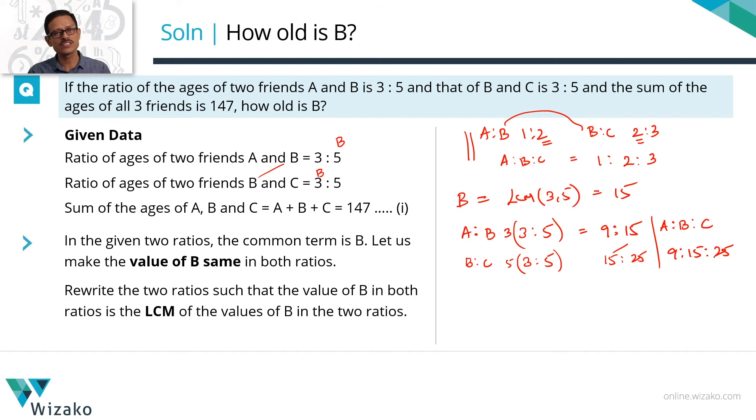Now that we know A is to B is to C is 9 is to 15 is to 25. The ages of A, let's say is 9x, B will be 15x and that of C will be 25x. Sum of their ages therefore is going to be equal to 9x plus 15x plus 25x which is equal to 147.